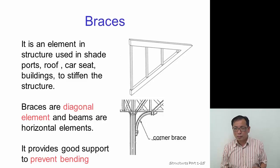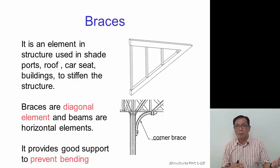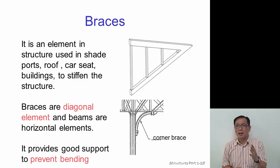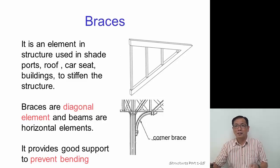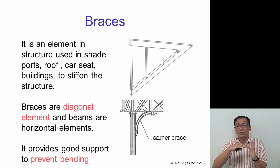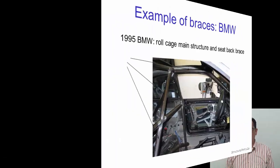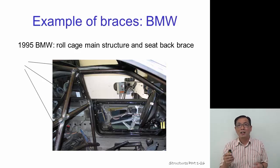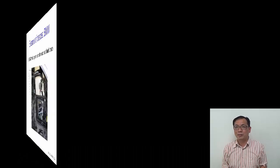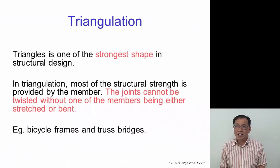Braces are used in car porch roofs to stiffen structures. They are diagonal elements — beams are the horizontal elements and columns are the vertical elements, while the brace is the diagonal one that supports both. This is very effective for preventing bending. You can see the diagonal pieces acting as braces in the car porch illustration.